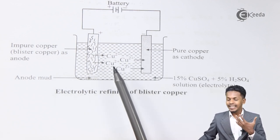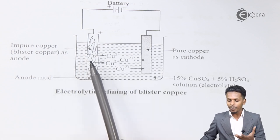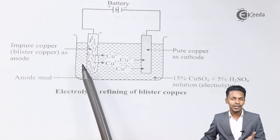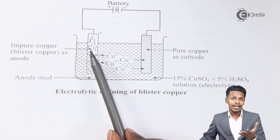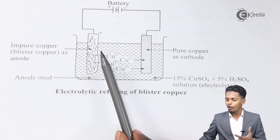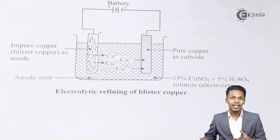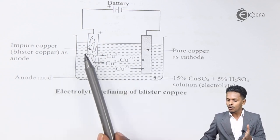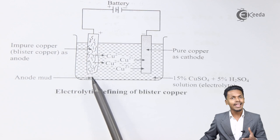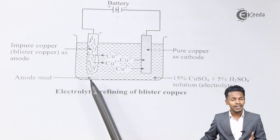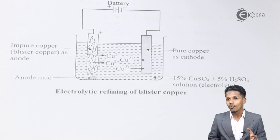The blister copper anode dissolves and is oxidised, releasing Cu2+ ions into the electrolyte. These Cu2+ ions — both from the electrolyte and from the dissolving anode — get deposited onto the pure copper cathode. This converts the impure copper to pure copper, and the impurities settle as anode mud.